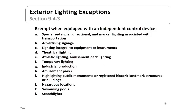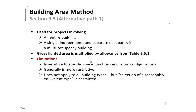Exterior lighting exceptions include specialized signal lights, directional lights, advertising, signage, lighting integral to equipment, theatrical lighting, sports lighting, swimming pools, searchlights, and so on. All of these are accepted from the exterior lighting power requirements.